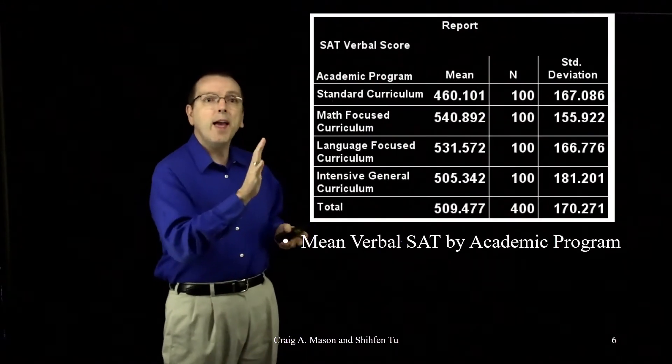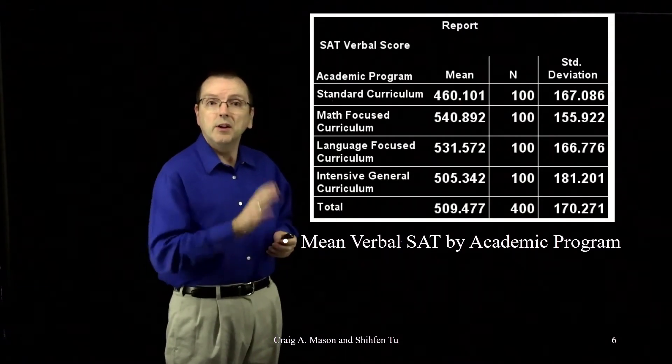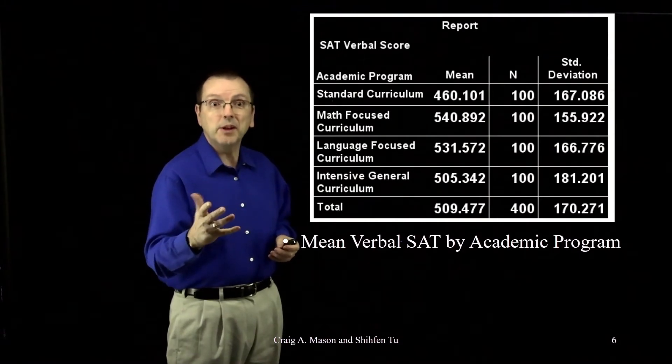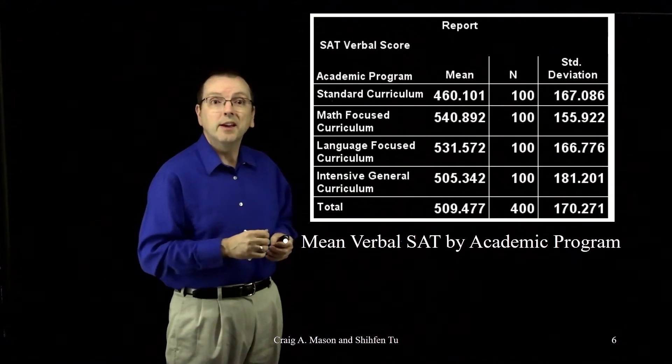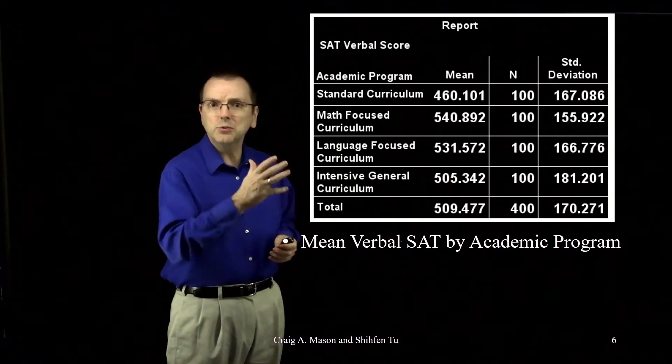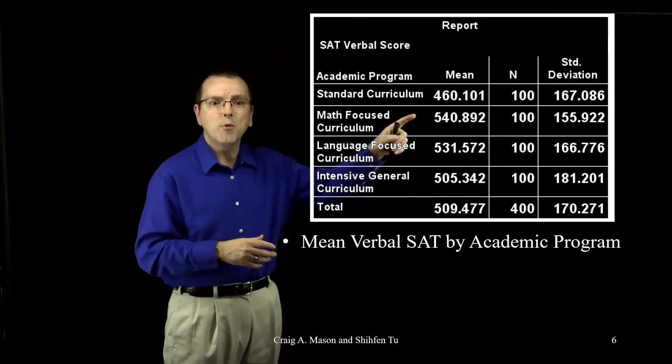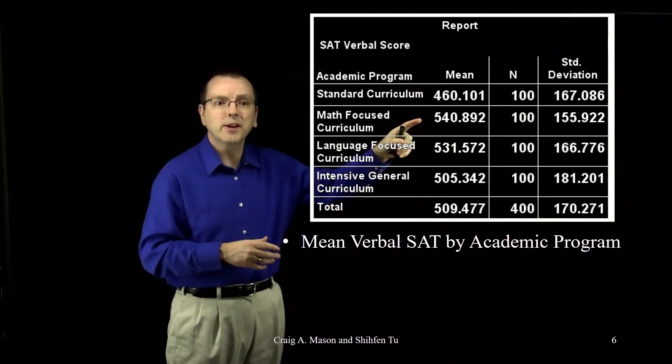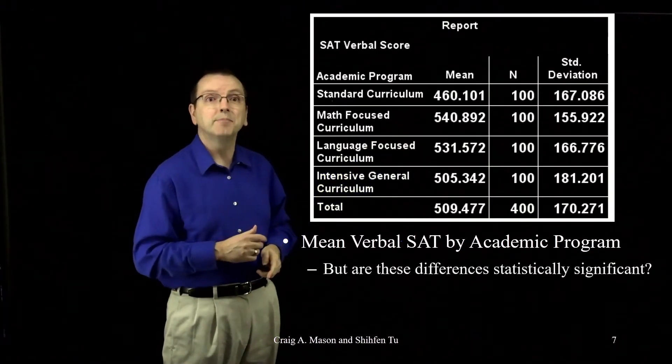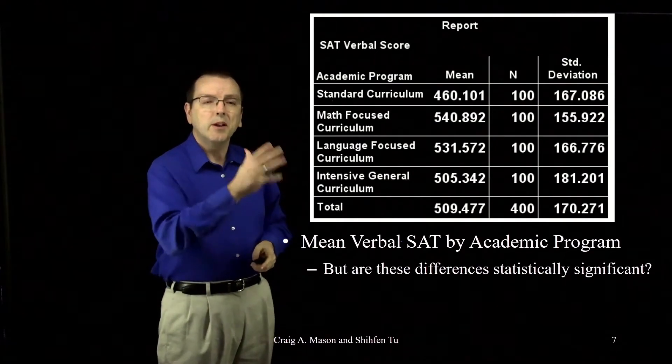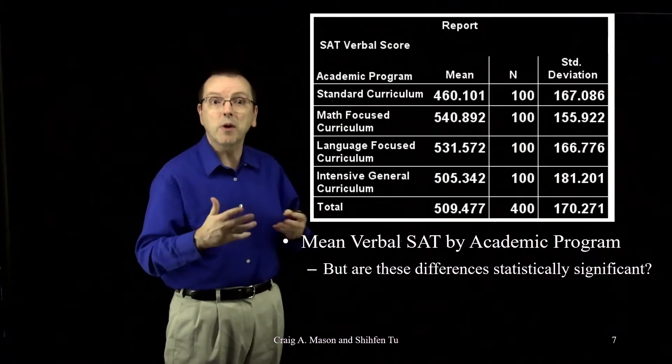Here we have the mean verbal SAT scores for these four groups. In this simulated data we have exactly 100 students in each group, and the scores do look a little different from each other, ranging from 460 for the standard curriculum up to almost 541 for the math-focused curriculum. But those differences could just reflect random sampling error, right?